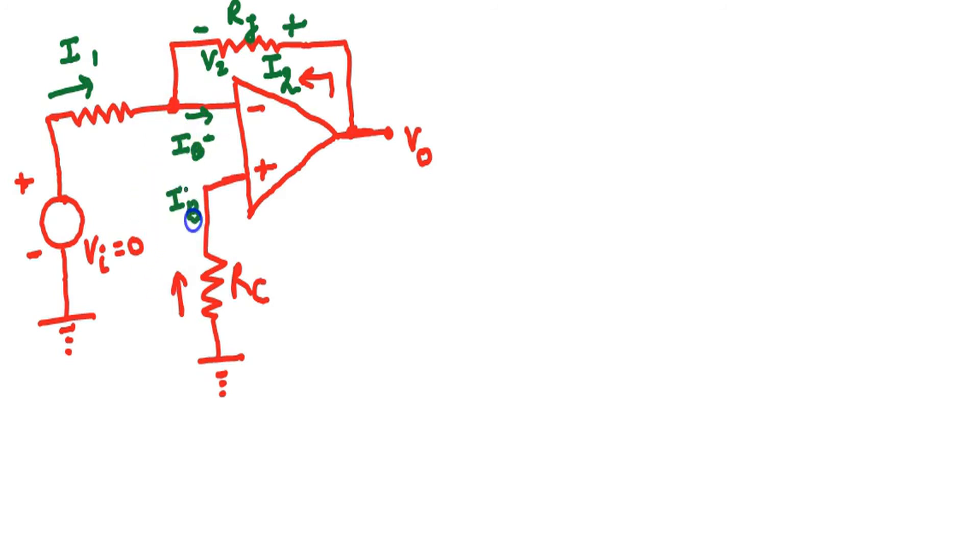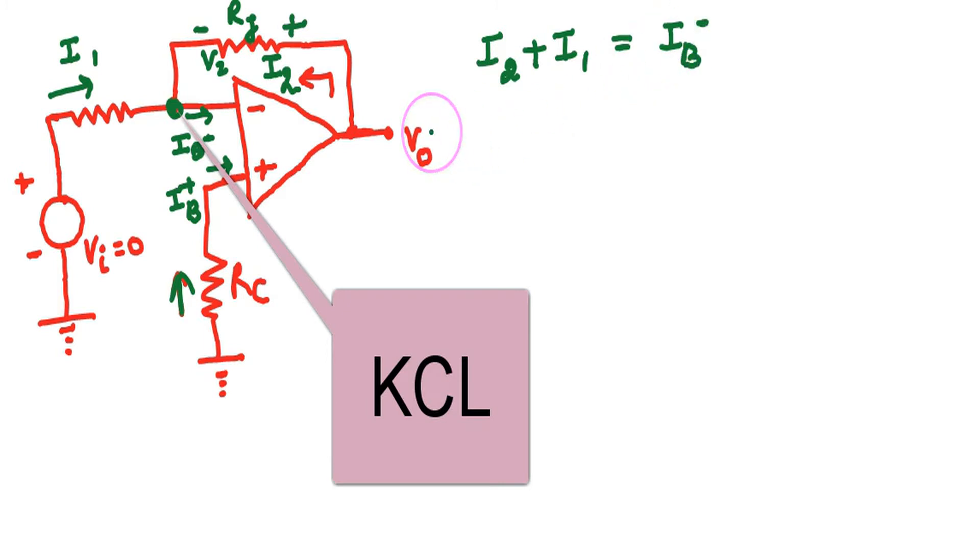Let the voltage is connected at the non-inverting terminal. Kirchhoff's current law is written at this node. There are three currents: I1 is towards the node, I2 is towards the node, and IB minus is going away from this node. V1 is the voltage. By Ohm's law it is current into resistance, IB plus into RC.